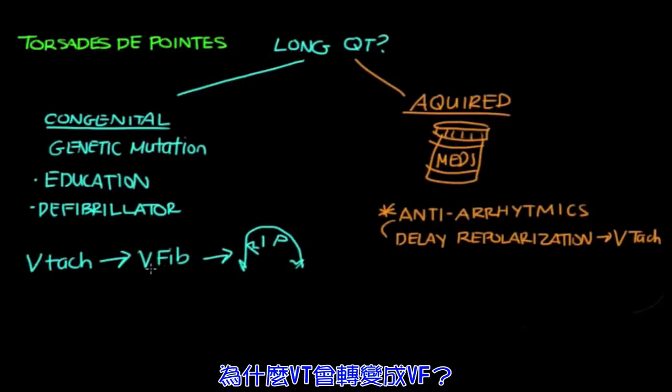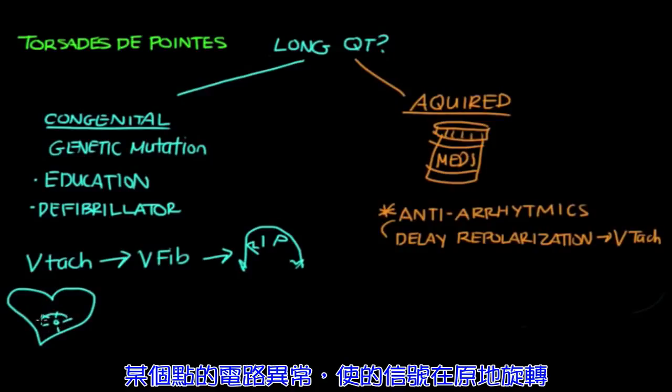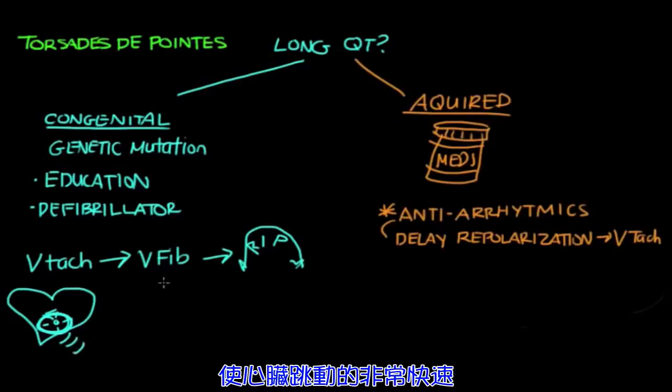Now, why does V-tach turn into V-fib? Well, in V-tach, there's either an irritated area of the ventricles or some sort of abnormal circuit that's going around in circles firing away, making the heart beat really fast. However, V-tach is still an organized rhythm.